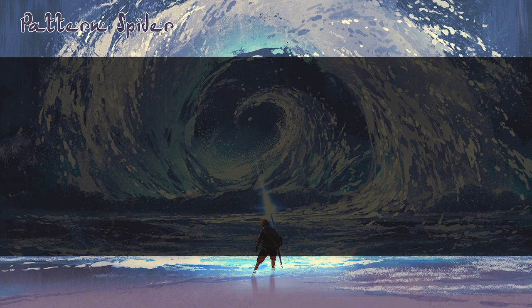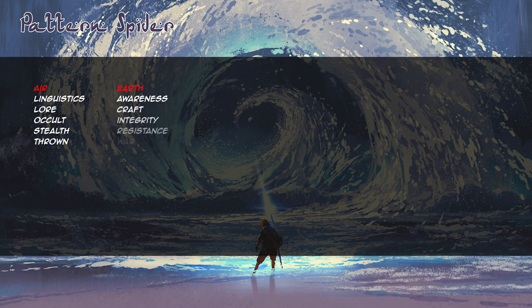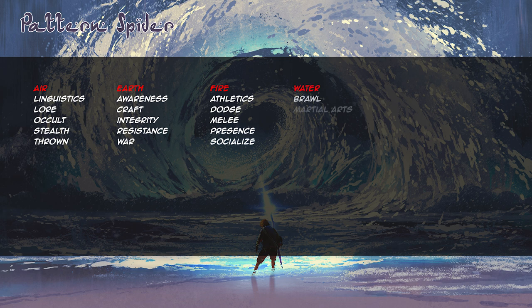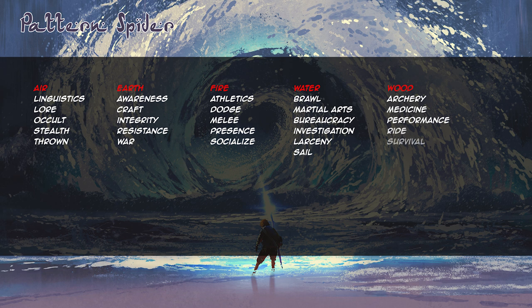While the Solar Exalted had more freedom choosing caste abilities from a selection of eight, Dragon-Blooded settle for the five abilities presented as aspect abilities. Air aspects have linguistics, lore, occult, stealth, and thrown. Earth aspects have awareness, craft, integrity, resistance, and war. Fire aspects have athletics, dodge, melee, presence, and socialize. Water aspects have brawl and martial arts, bureaucracy, investigation, and larceny. And finally our own aspect — the wood aspect — has archery, medicine, performance, ride, and survival.